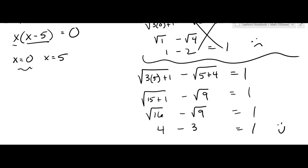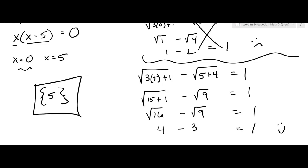So x equals 5 is the answer. Sometimes neither solution works, sometimes only one does, and sometimes both work. The process is: isolate one radical, square both sides, then move everything over to isolate the other radical, and square both sides again.